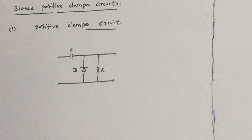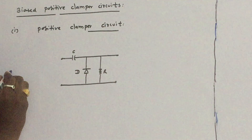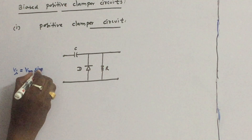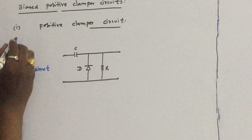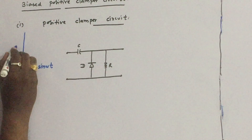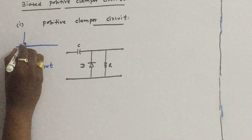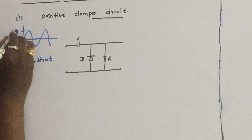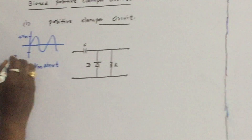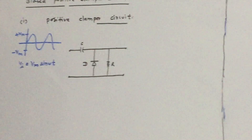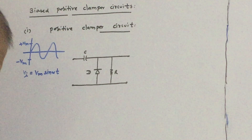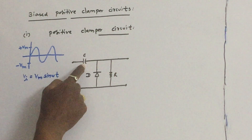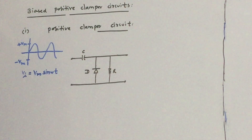For this circuit, we apply a sinusoidal input, Vm sine omega t. This is the input waveform with plus Vm as the positive peak and minus Vm as the negative peak. The polarity of the capacitor is very important in the clamping operation.